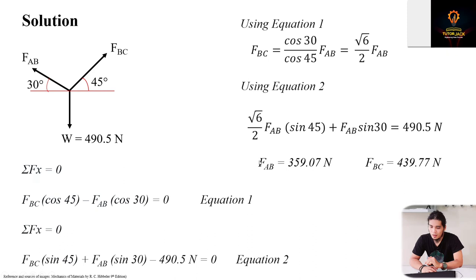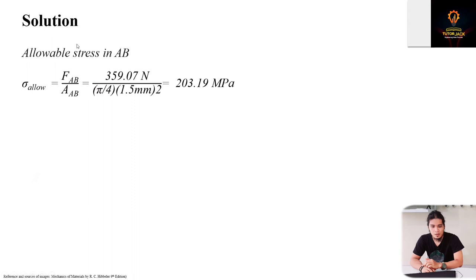Since we have the internal forces, we can now get the stresses in our wires - the allowable stresses. For allowable stress in AB, we'll use the FAB we calculated and the given area of AB. Given the diameter and it's a cylindrical wire, we have 359.07 newtons divided by the area which is pi over 4 times d squared. We get 203.19 megapascals. This is the allowable stress of wire AB based on the given load, the weight of the flowerpot.